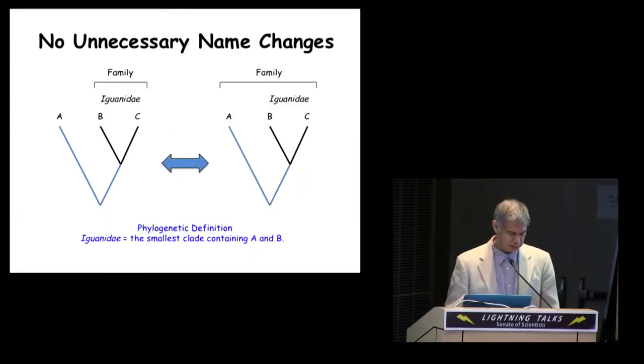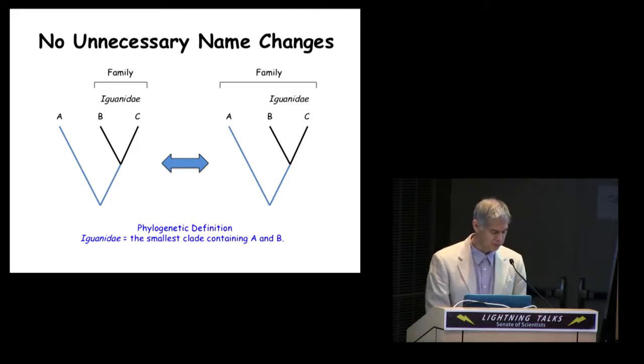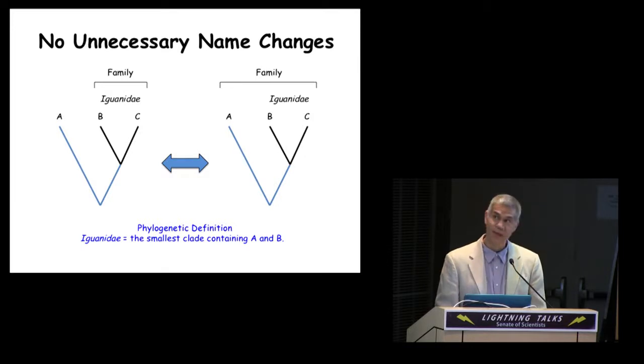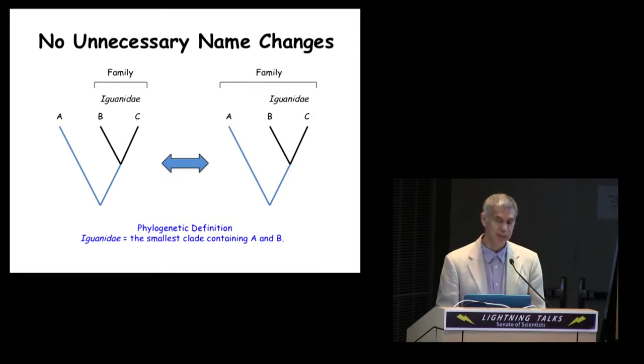Under this approach, names would no longer be affected by subjective changes in ranks. You can see that in this example, where the name Iguanidae is defined as the smallest clade containing B and C. Under this definition, the fact that the B-C clade is ranked as a family on the left, but not on the right, makes no difference to the application of the name, which retains its association with the same clade under both artificial ranking schemes.